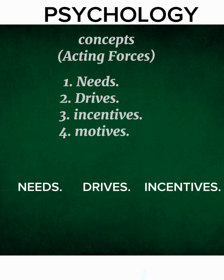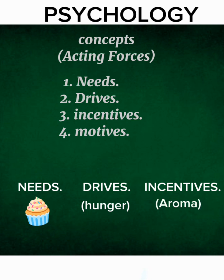Suppose I need food. My need is food. If I need food, I will feel hungry — and hunger is my drive. The purpose of that drive is to satisfy my need, which is food. Now, if I saw food nearby with a pleasant aroma, that aroma would serve as an incentive because it reinforces the drive. So: the need is food, the drive is hunger, and the incentive is the aroma.